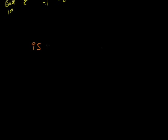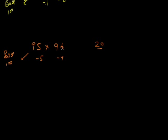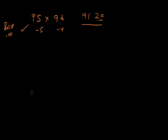Let's try 95 times 96. The base is 100. 95 is 5 less and 96 is 4 less than 100. 5 times 4 is 20 — using 2 places since the base is 100. Then 95 minus 4 (or 96 minus 5) is 91. So 95 times 96 equals 9120.